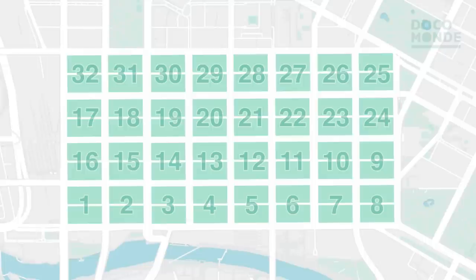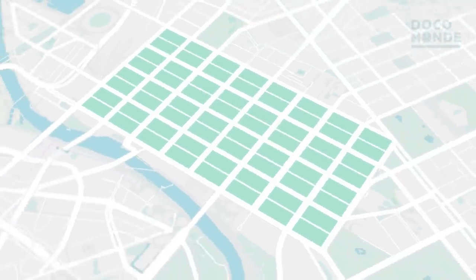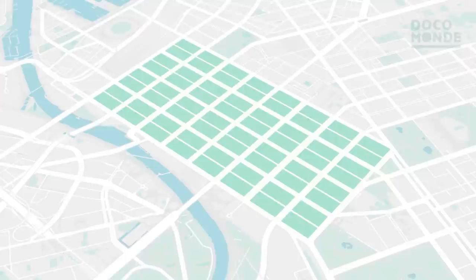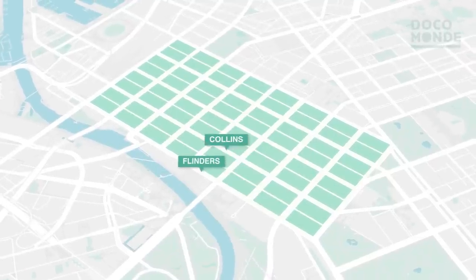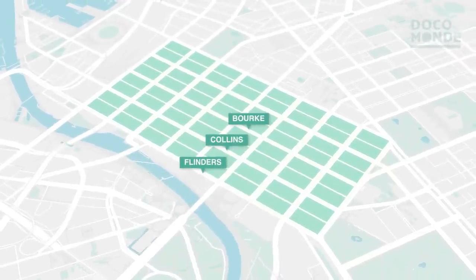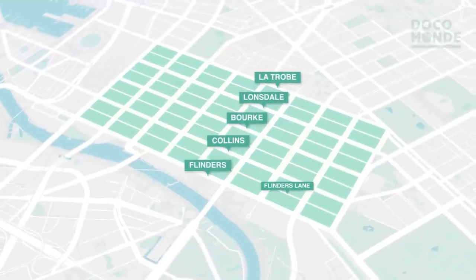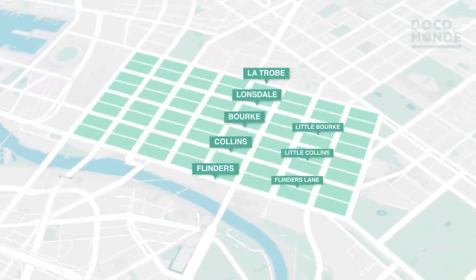Streets within the Hoddle grid were generally named after British dignitaries, and it's quite common for locals to know all street names in order. Running east to west are Flinders, Collins, Bourke, Lonsdale and Latrobe Street, each partitioned by its respective little street.